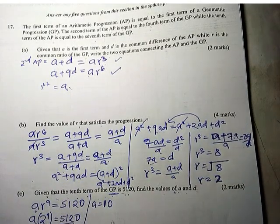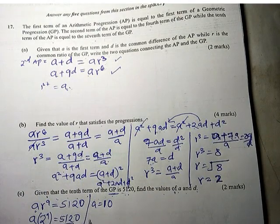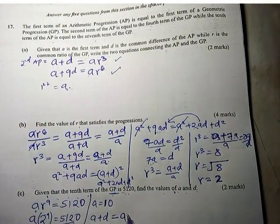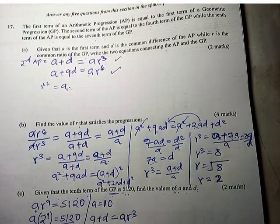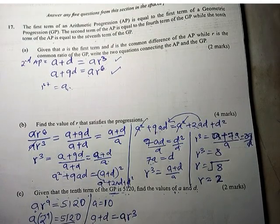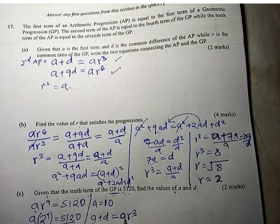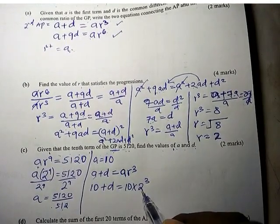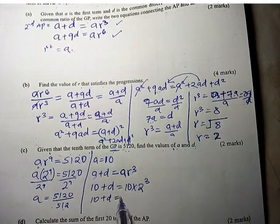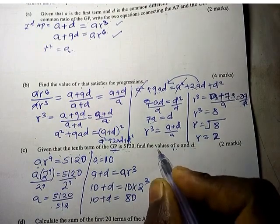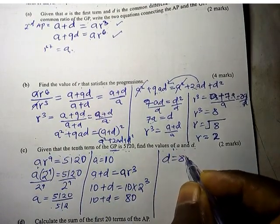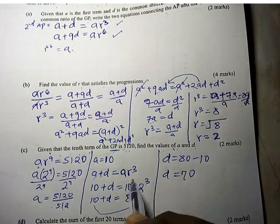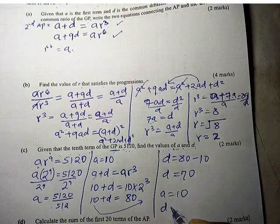To find D, we use A plus D equals AR³. With A equals 10 and R equals 2: 10 plus D equals 10 times 2³, which is 10 times 8 equals 80. So D equals 80 minus 10, giving D equals 70. Therefore A equals 10 and D equals 70.